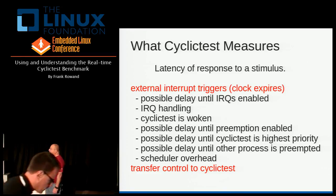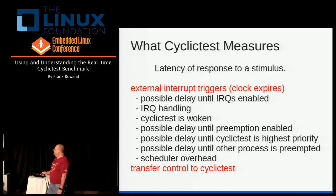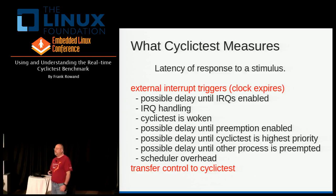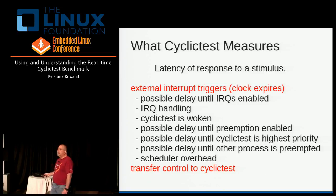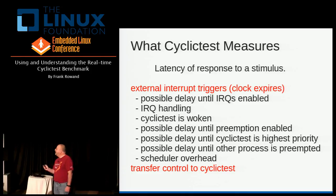We have some sort of external interrupt trigger, such as a clock expiring, but it could be a sensor triggering or any sort of device. Lots of things can happen before we actually transfer control to our real-time program. In our case, we're going to use cyclic test as our real-time program. So lots of things can go wrong and slow us down.